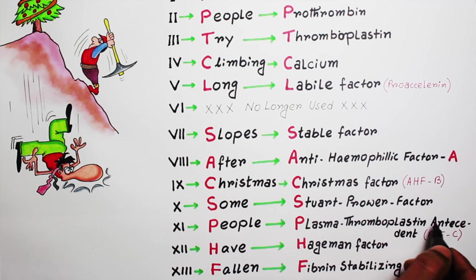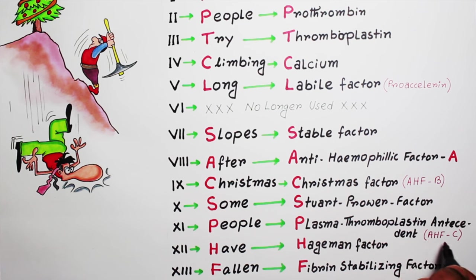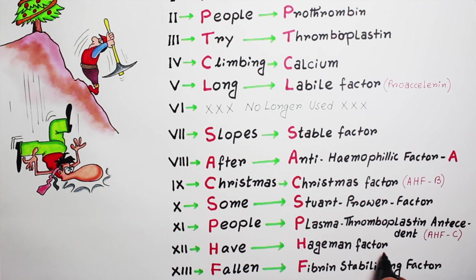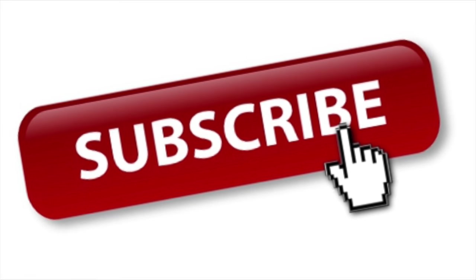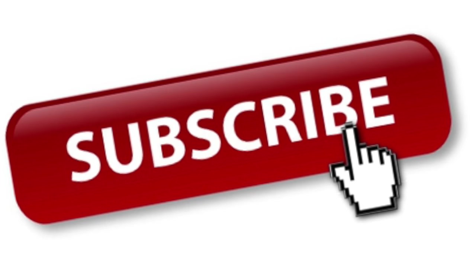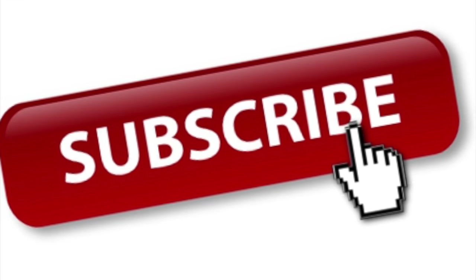Factor 11 — P for plasma thromboplastin antecedent, which is also called anti-hemophilic factor C; factor 12 — H for Hageman factor; and factor 13 — F for fibrin stabilizing factor. That's all, guys!